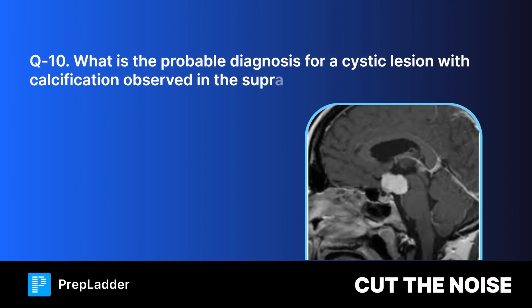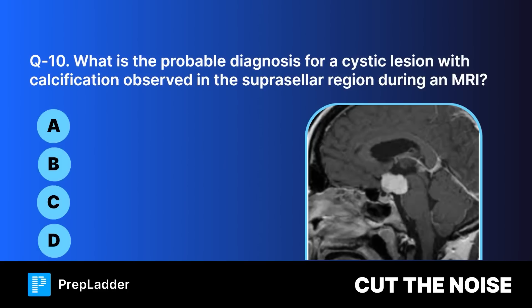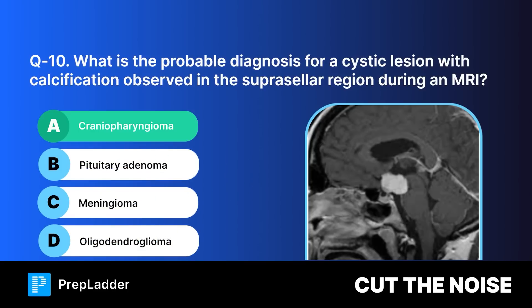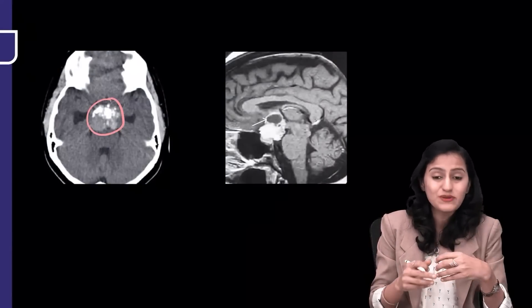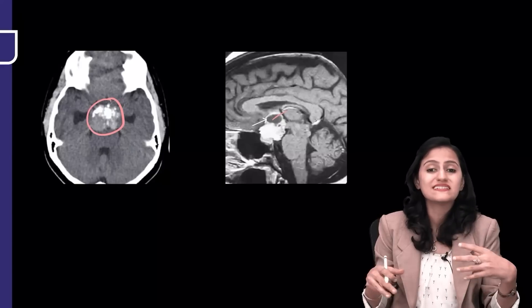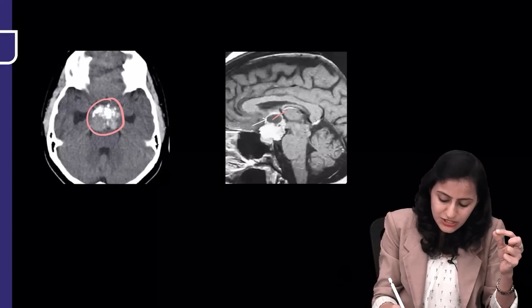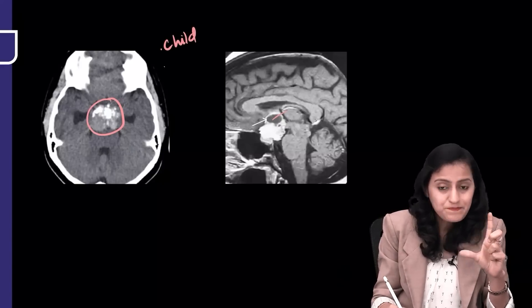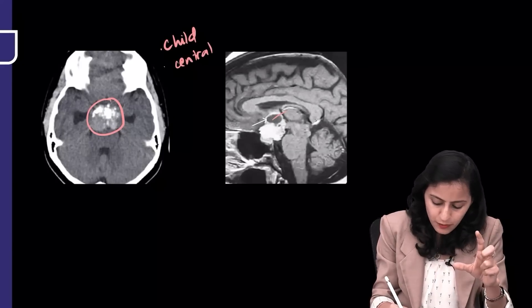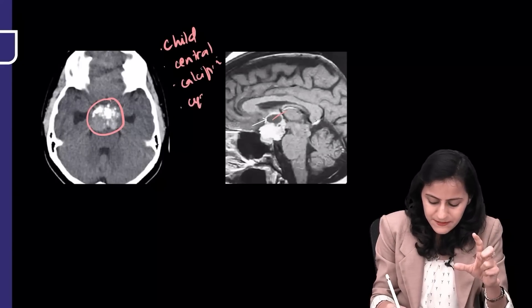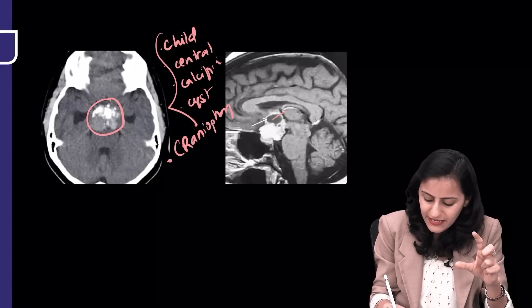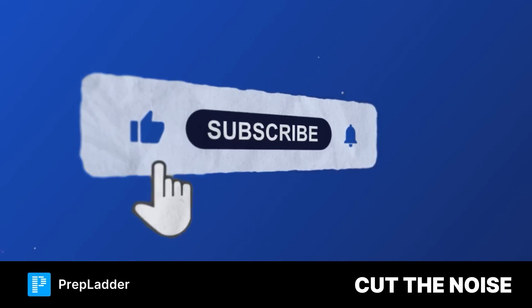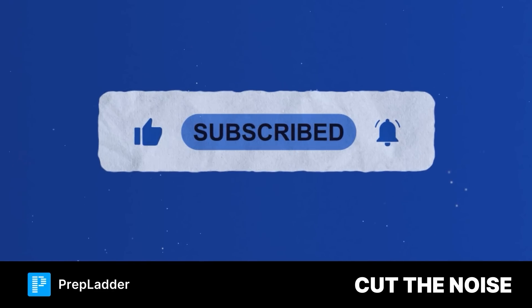Question ten: What is the probable diagnosis for a cystic lesion with calcification in the suprasellar region on MRI? The correct answer is craniopharyngioma. Remember the three C's: a Child with a midline (Central) lesion with Calcification and a Cyst — the diagnosis is Craniopharyngioma. Don't forget to like and subscribe if you found the video interesting.